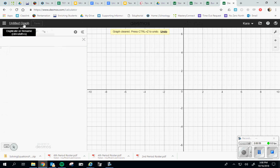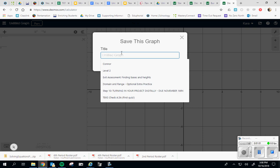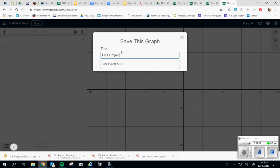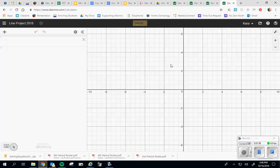Then where it says untitled graph you want to create a name, so maybe Line Project 2018. Click save. What you should see then at the top of your screen is the new title.